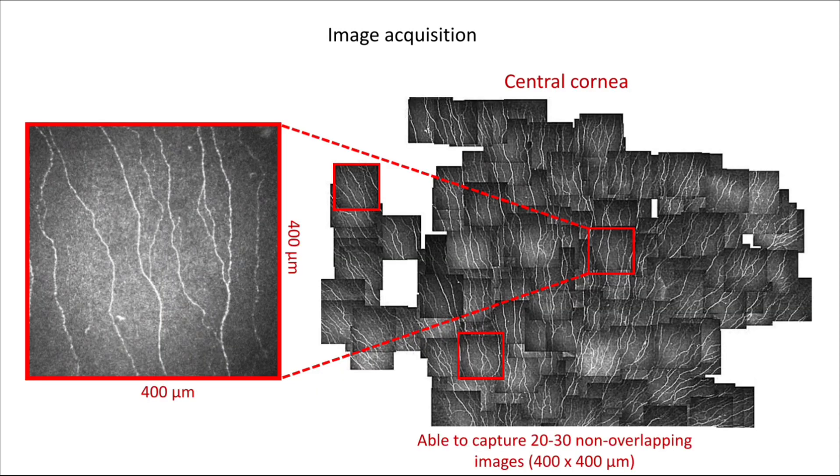A single image taken by the HRT device has dimensions of 400 micrometers by 400 micrometers, and you should be able to capture about 20 to 30 non-overlapping images within the central cornea.